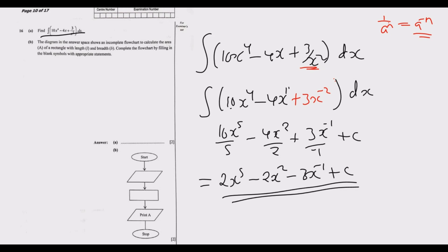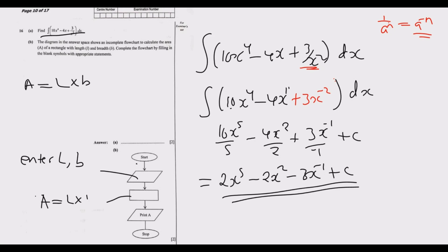Question 16b: a diagram shows an incomplete flowchart to calculate the area of a rectangle with length l and breadth b. Complete the flowchart. The area of a rectangle = l × b. So: Start → Input l and b → Calculate: Area = l × b → Print the result → Stop. This is how you complete the flowchart to earn the two marks.